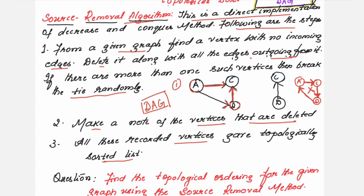The very first step says to identify a vertex with no incoming edges. Vertex A has no incoming edges — only outgoing edges — so delete it. When deleted, the edges from A are also removed, leaving the graph with only vertices C and D. Next, identify vertex D which has no incoming edges and delete it, leaving only C. Recording the deletions: A, then D, then C — giving topological ordering A, D, C.